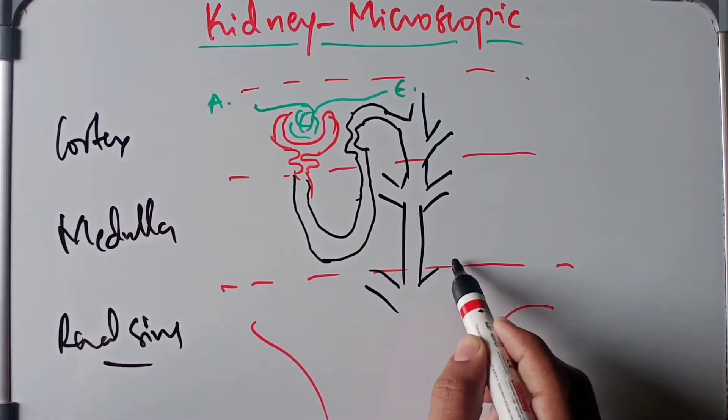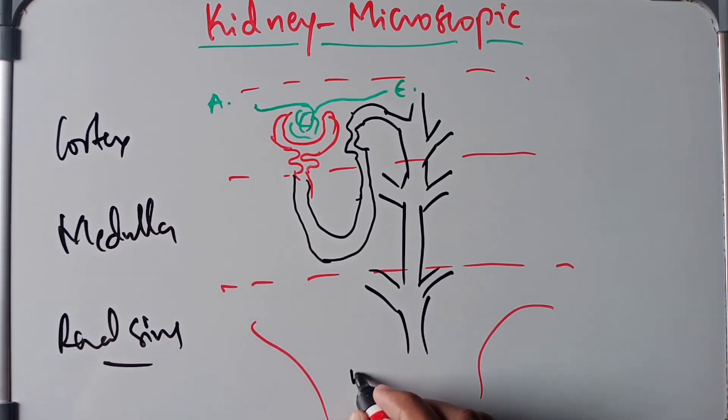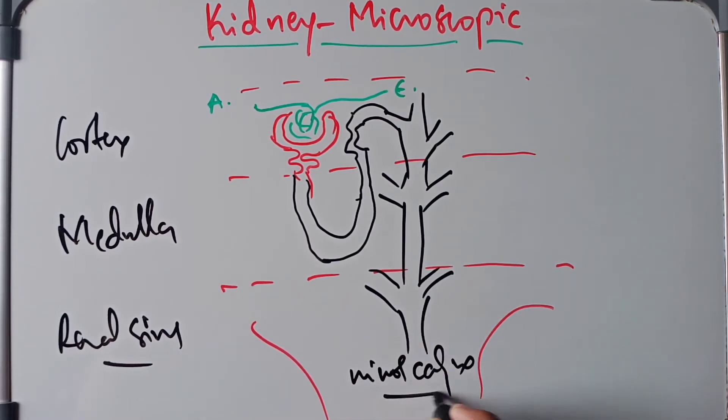This collecting duct will drain into the minor calyx of the renal sinus.